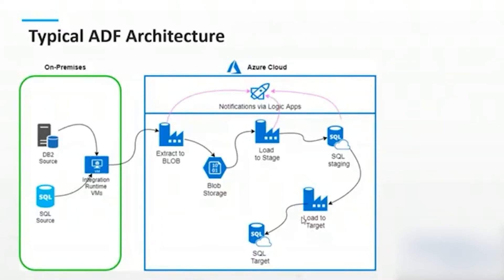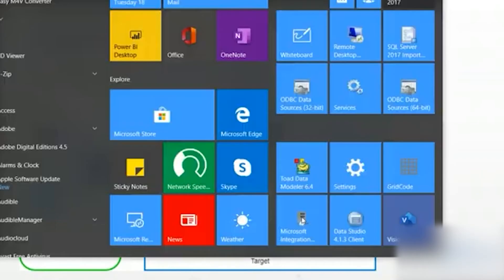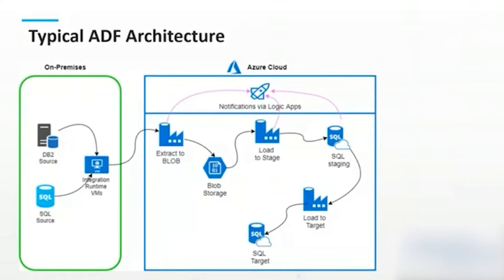One thing Data Factory doesn't do — and I'm not going to get deeply into it here — is send notifications. Data Factory doesn't have a built-in alert methodology. A common method for alerts, error notifications, and status updates is to use Logic Apps, which is a separate but fairly simple setup. That's part of the overall architecture, but we won't cover it today.